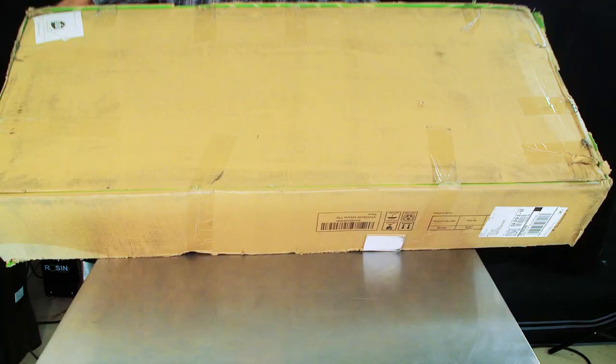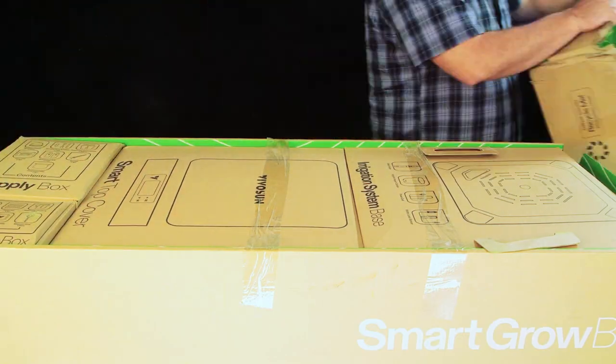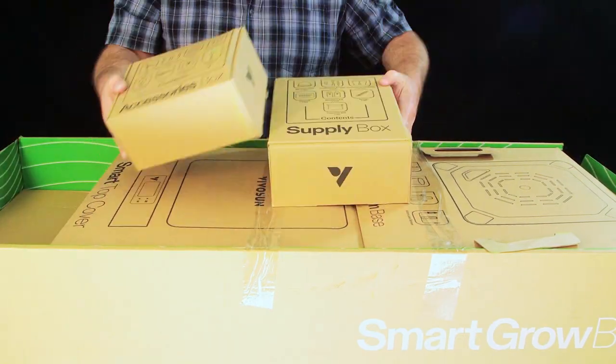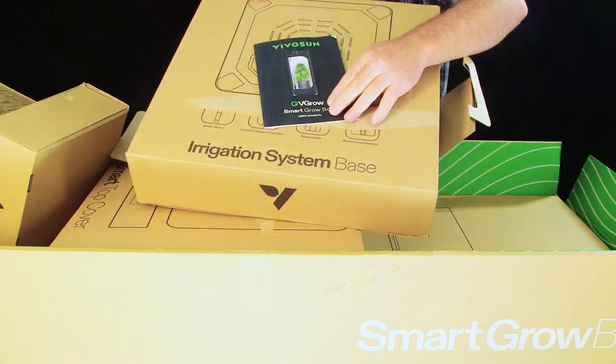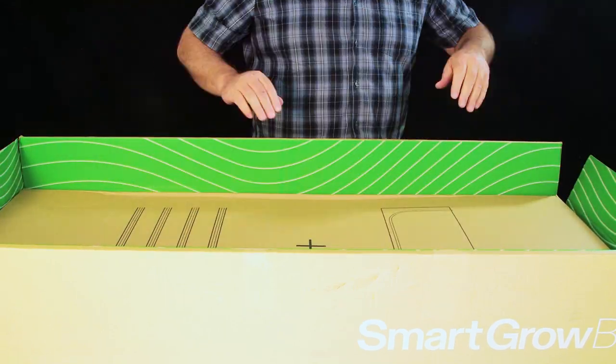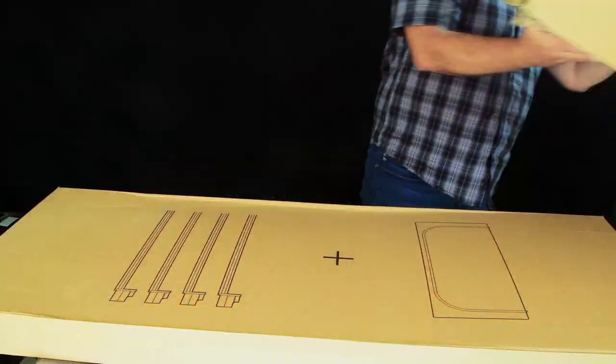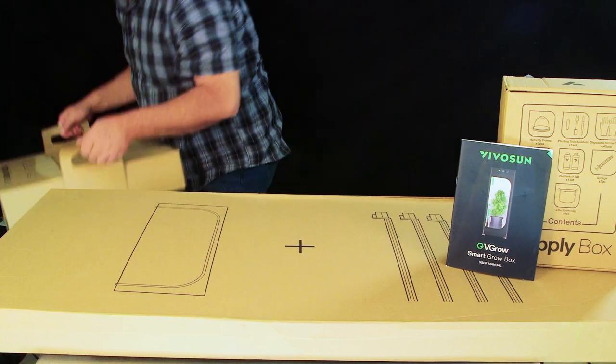Let's go ahead and open up this big old box that has the grow box in it. Unlike other grow boxes I've reviewed, this box is actually pretty small and easy to handle, so that's one positive thing about it already. Inside the larger box is a series of smaller boxes that contain the different components that will be assembled.